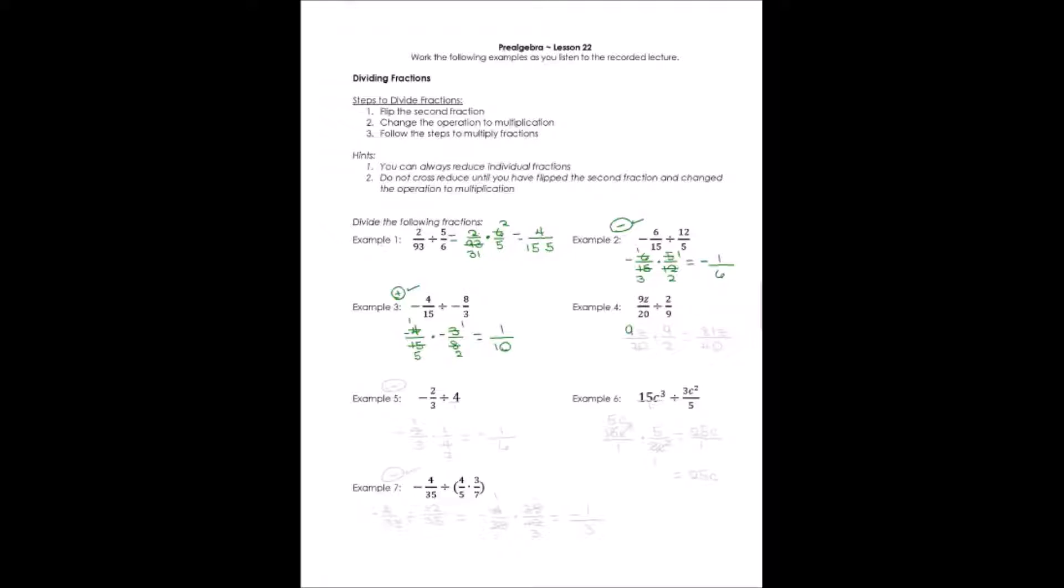Number 4, 9z/20 divided by 2/9 is the same as times 9/2. Now, here's where it really messes us up sometimes. When you looked at that division problem, you probably thought, oh wow, it cross-reduces really well. Remember, you cannot cross-reduce division. It has to be in multiplication form, so we can't cross-reduce this at all.